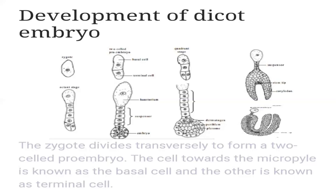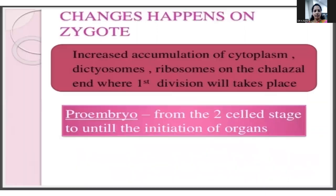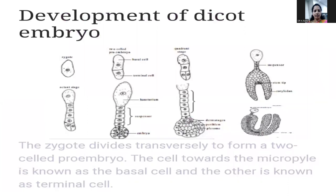According to embryologists Snarf, Johnson, and Maheshwari, five main types of embryos are recognized in dicotyledons. These are: first, the cruciferous type; second, the asterot type; third, the solanot type; fourth, the karyophyllate type; and fifth, the kinopodial type. There are slight differences among them in how the terminal and basal cells contribute to embryo development.